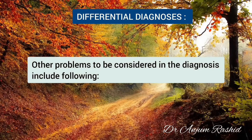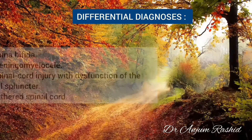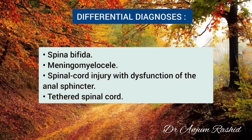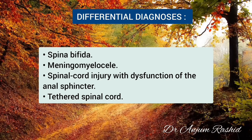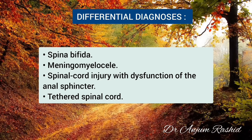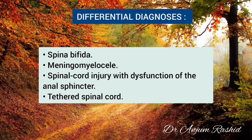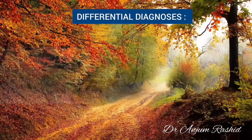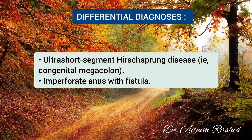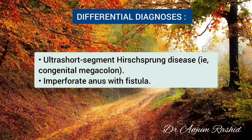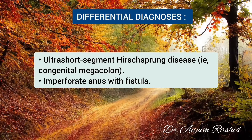Other problems to be considered in the differential diagnosis include spina bifida, meningomyelocele, spinal cord injury with dysfunction of the anal sphincter, tethered spinal cord, ultra-short segment Hirschsprung disease (congenital aganglionic megacolon), and imperforate anus with fistula.